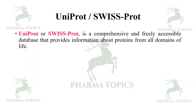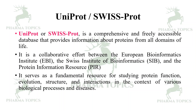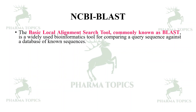UniProt or SwissProt is a comprehensive and freely accessible database that provides information about proteins from all domains of life. It is a collaborative effort between the European Bioinformatics Institute, the Swiss Institute of Bioinformatics, and the Protein Information Resource. It serves as a fundamental resource for studying protein function, evolution, structure, and interactions in the context of various biological processes and diseases.